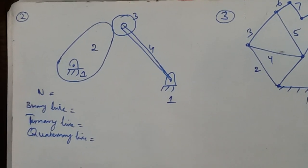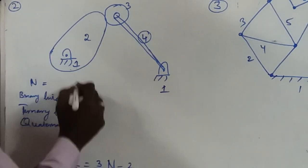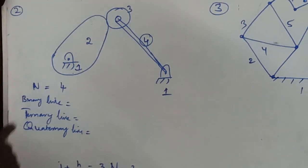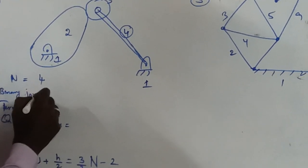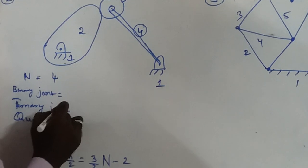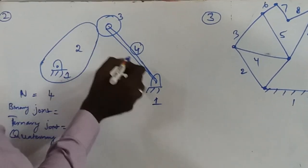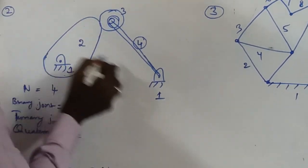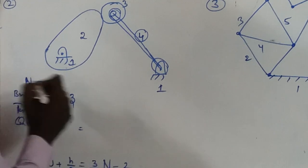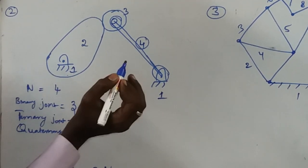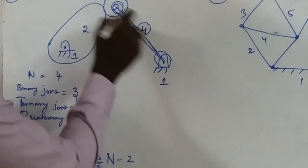Now let us discuss the second problem. In this mechanism, the total number of links is equal to 4. The number of binary joints: there is one binary joint between links 1 and 2, one between links 2 and 3, one between links 3 and 4, and one between links 4 and 1 — so there are 3 binary joints. There is no ternary joint and no quaternary joint.